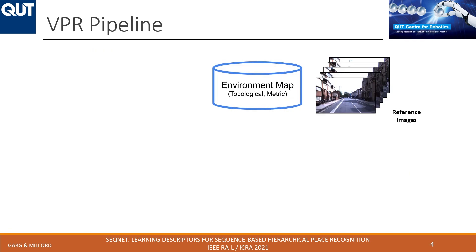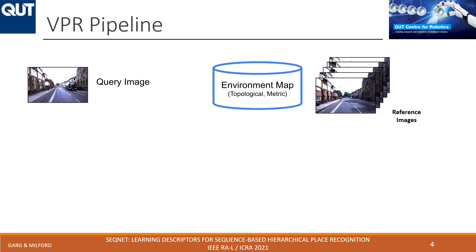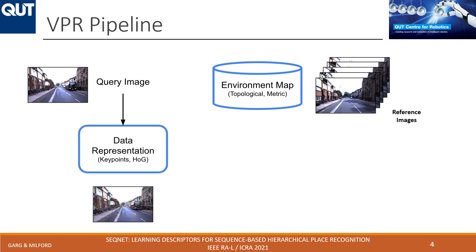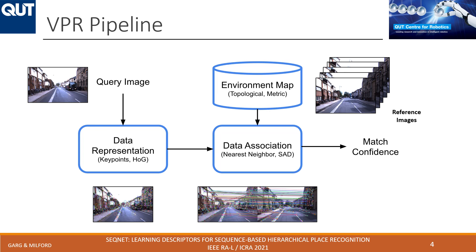A typical visual place recognition pipeline works as follows. The map of the environment is defined as a collection of images captured by a robot during its first traversal of a particular environment. Given another query image captured from a revisit of that environment, one first does data representation — defining key points as local features or global descriptors. Then data association happens: the query image is matched with images in the reference database to find the closest match, determining whether it is a known revisited place or a new place.